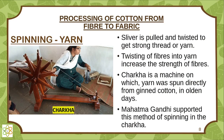Spinning yarn: the sliver is pulled and twisted to get a strong thread or yarn. Twisting of fibers into yarn increases the strength of fibers. Charkha is a machine on which yarn was spun directly from gin cotton in olden days. Mahatma Gandhi supported this method of spinning on the charkha.